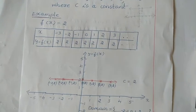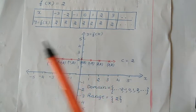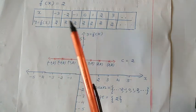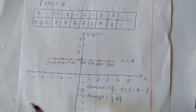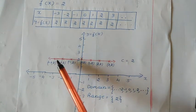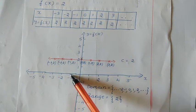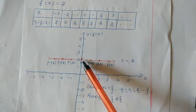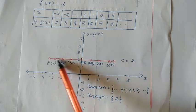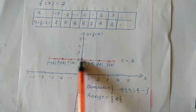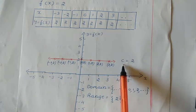The same table can be represented using a graphical representation. Here I have taken x and y coordinates with the values. The points are: minus 3 and 2, minus 2 and 2, minus 1 and 2, 0 and 2, 1 and 2, 2 and 2, 3 and 2. You can see that you get a straight line with the constant value, that is c equals 2.